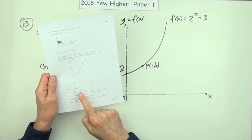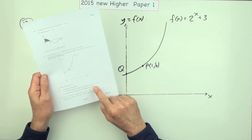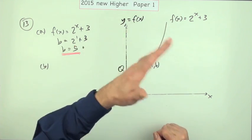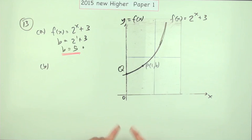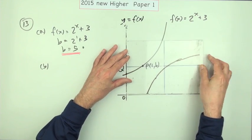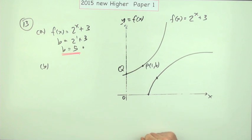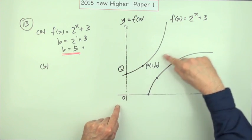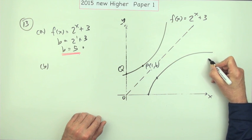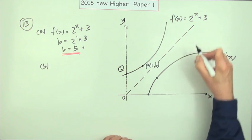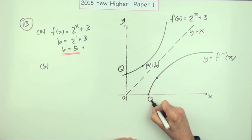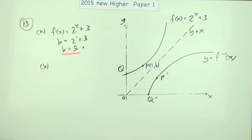Part (b)(i): copy the above diagram and on the same diagram sketch the graph with equation y equals the inverse function. The inverse simply means interchange the axes — take the answers and make them the inputs. It flips the graph over, and that graph is obtained by reflecting it in the line y equals x. There's only one mark for the whole diagram. The image of Q and the image of P are shown, but those weren't specifically asked for — just the graph.